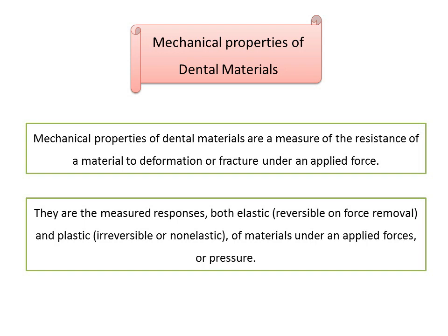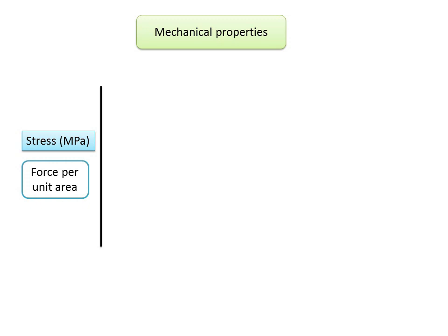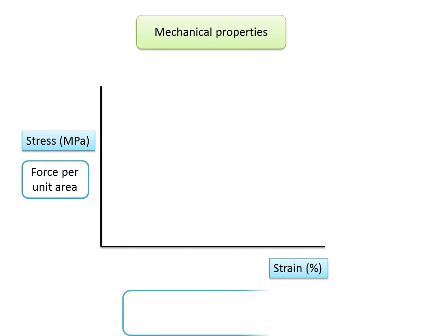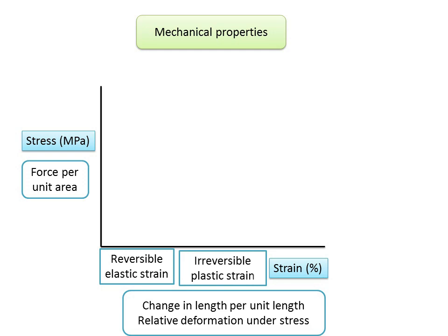We shall discuss mechanical properties based on the stress-strain graph. The y-axis represents stress, measured in megapascals — the force per unit area acting on millions of atoms or molecules in a given plane. The x-axis represents strain, measured in percent elongation — the change in length per unit length. Strain may be elastic or plastic, or a combination. Elastic strain is reversible; plastic strain represents permanent deformation that does not recover when the force is removed.